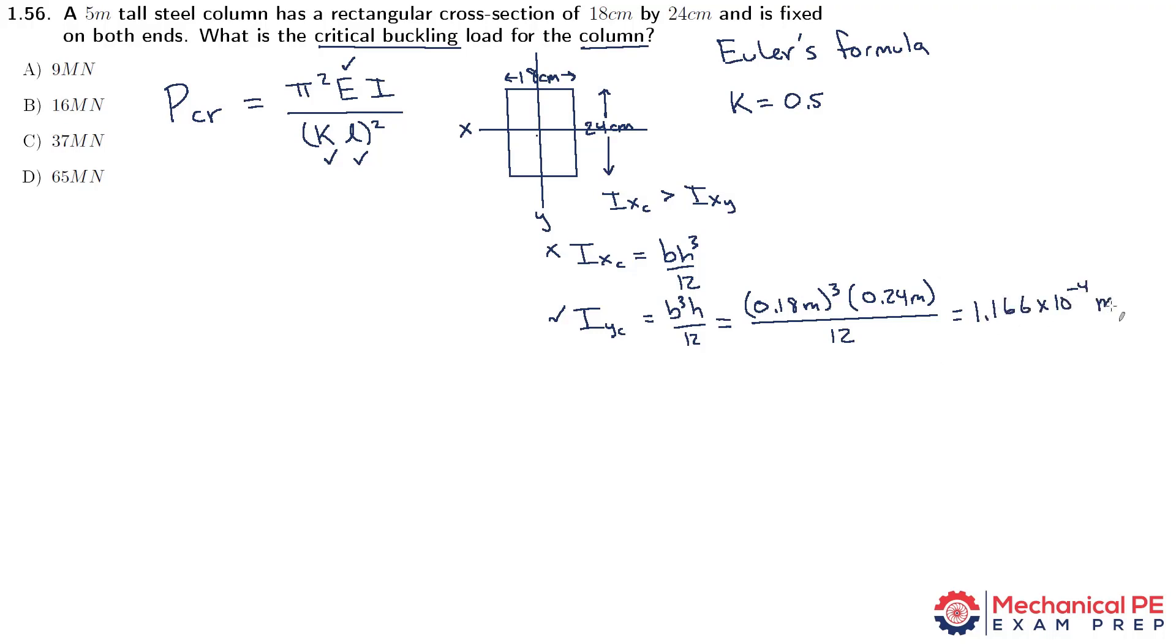And that's everything we need to plug in for the critical buckling load. P sub cr equals pi squared. We looked up the modulus of elasticity for steel, 200 GPa, which is 200 times 10 to the 9th pascals. Times the moment of inertia, the minimum moment of inertia that we just found, times 10 to the negative 4th meters fourth.